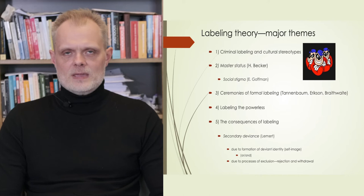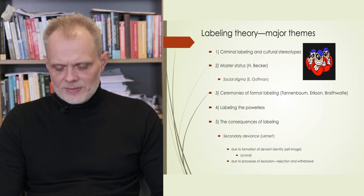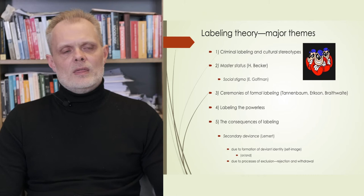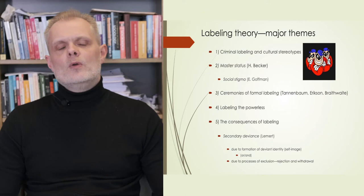Fourth theme, regardless of actual behavior, powerless individuals are much more likely to be labeled. There is plenty of evidence, both at the arrest stage and conviction stage, that powerless individuals, especially racial minorities in the U.S., are more likely to be arrested and convicted, regardless of what actually happened objectively.